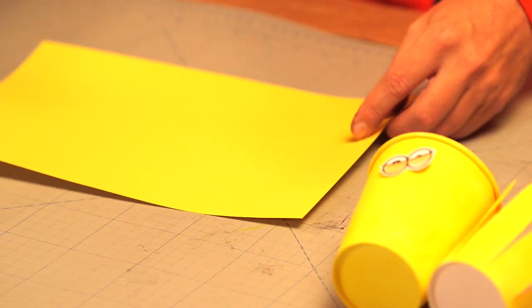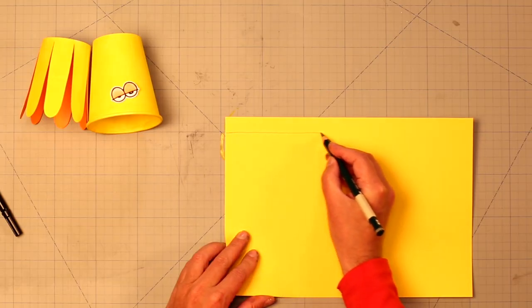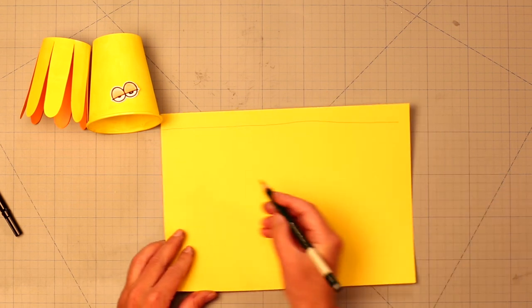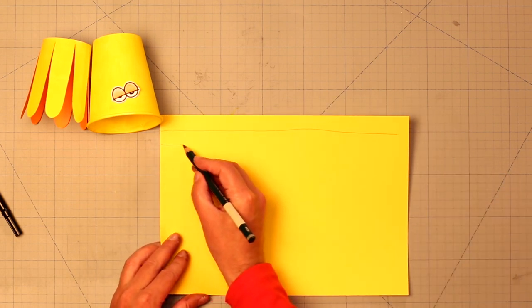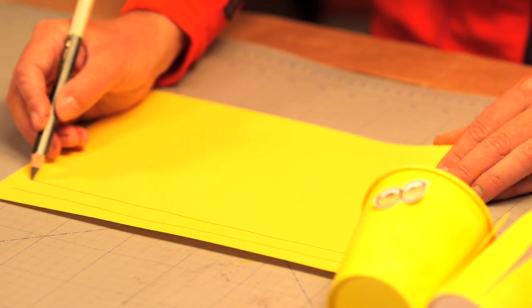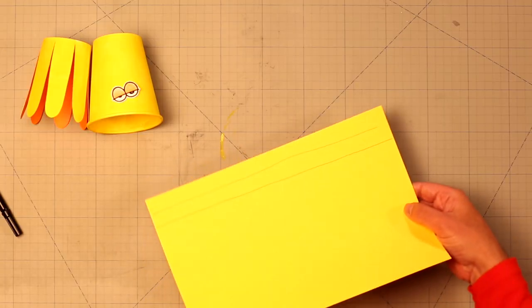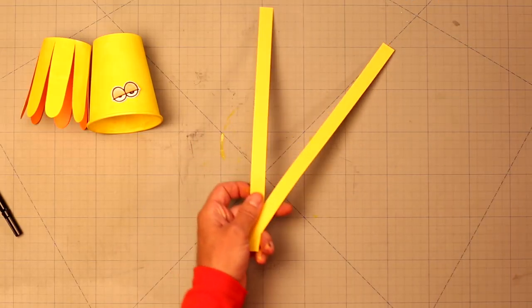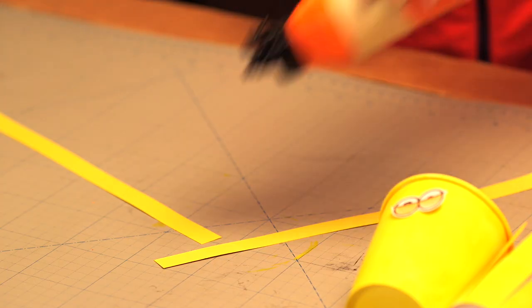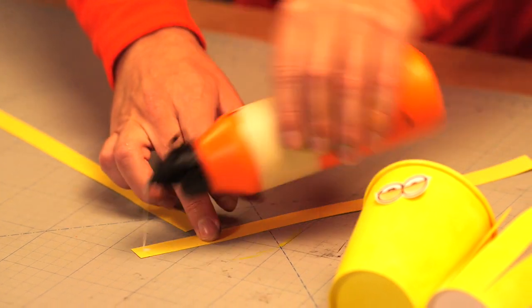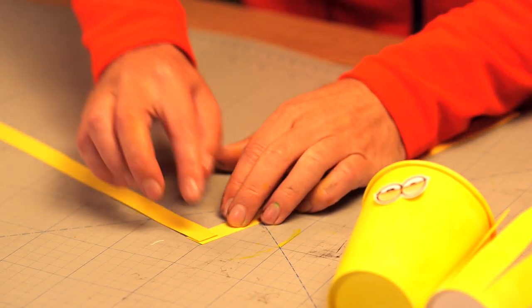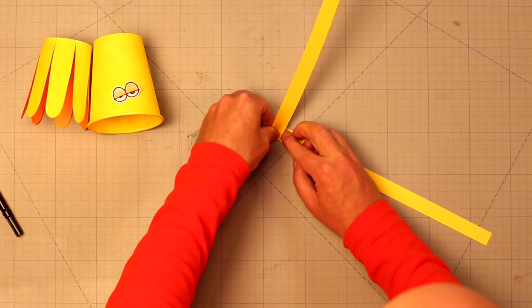Then we need two stripes of yellow paper. And fold a paper spring.